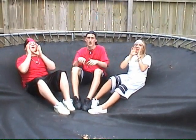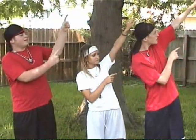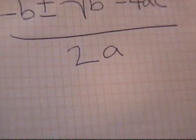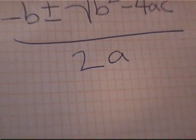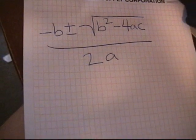Now stop — quadratic equation. A, B, C — they're the letters you need to make a quadratic equation easy. That's all. Negative B, plus or minus the square root of B squared minus 4AC, all over 2A.